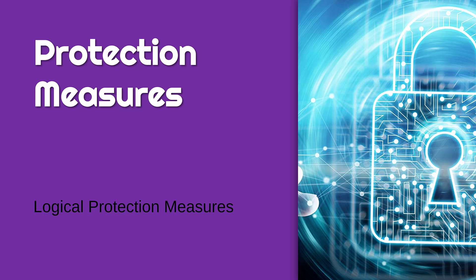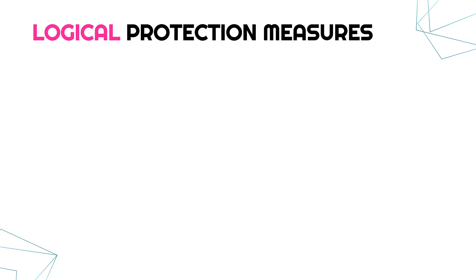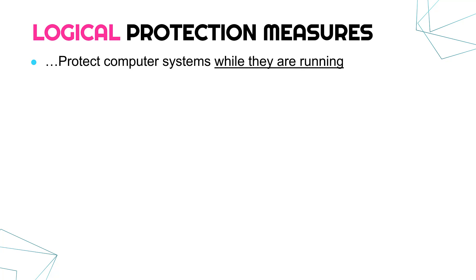Let's talk about logical protection measures. A logical protection measure is different to a physical protection measure because logical measures protect computer systems while they are running, whereas a physical measure protects the system from access. Physical is real life; logical is on the computer itself.